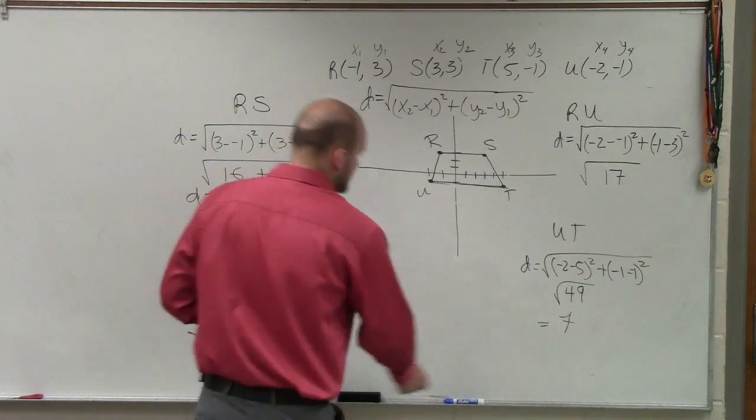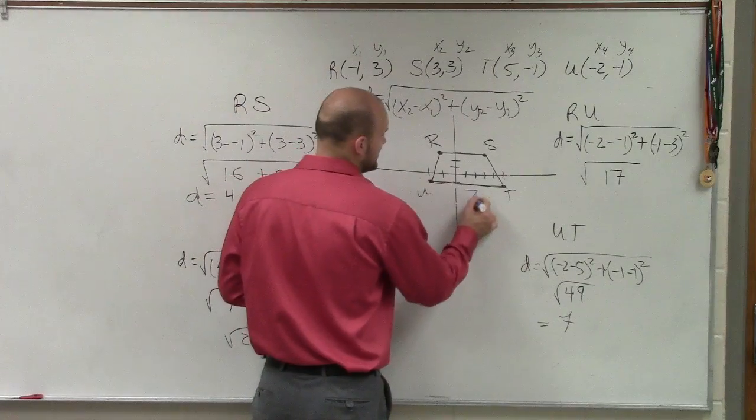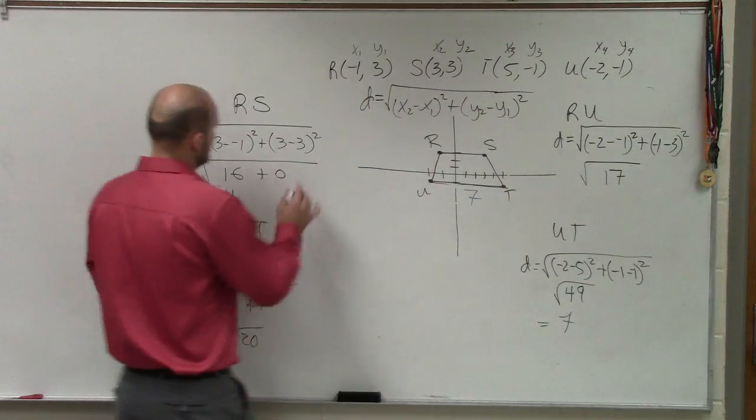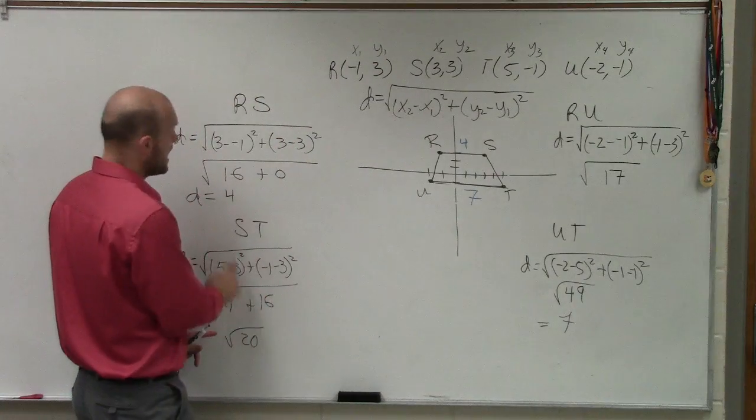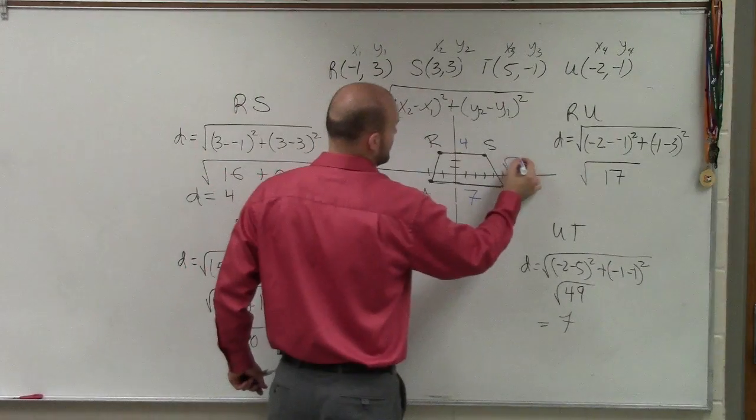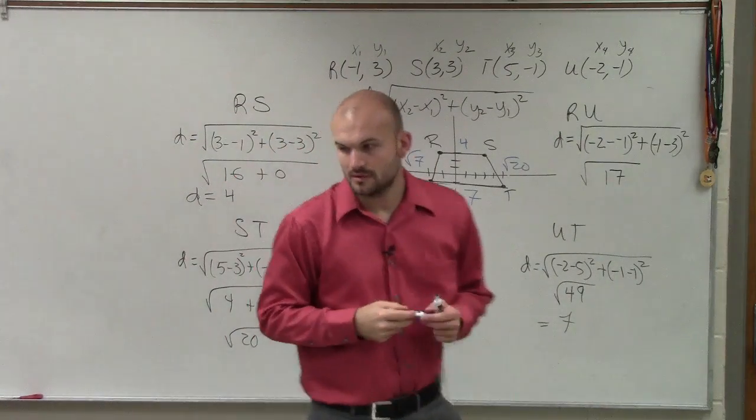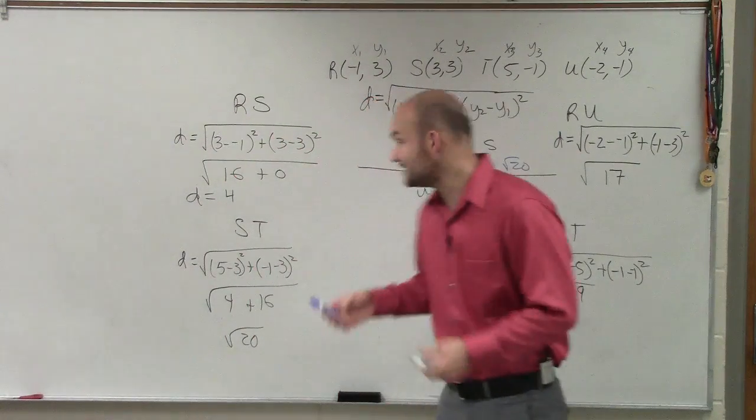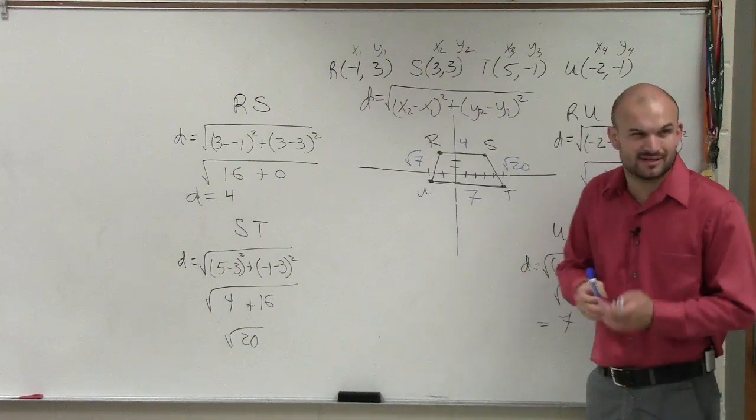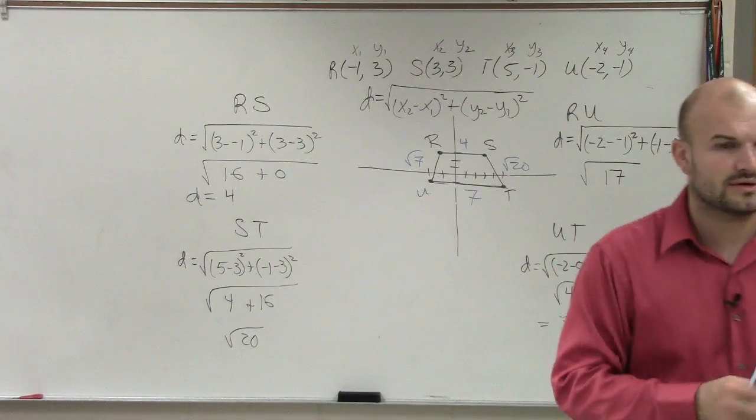So therefore, ladies and gentlemen, if you look at this, we have UT is 7, RS is 4, ST is the square root of 20, and RU is the square root of 17. So now, what they're asking is, what is the distance all the way around? Does everybody see what I did, what I was able to do?